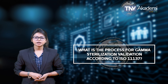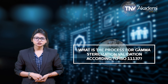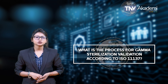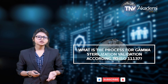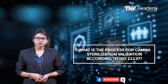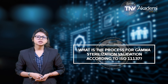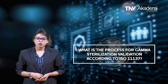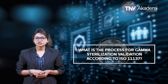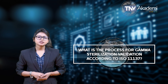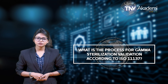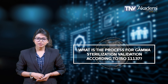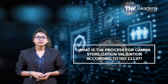The gamma sterilization validation process outlined in ISO 11137 is meant to ensure two critical outcomes. The first is that the desired Sterilization Assurance Level (SAL) is met using a minimum dose of radiation. The most commonly specified SAL is 10⁻⁶, or one potentially unsterilized device per million. The second is that product functionality is not compromised by exceeding a maximum dose of radiation.